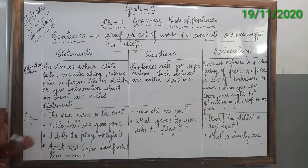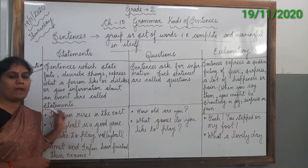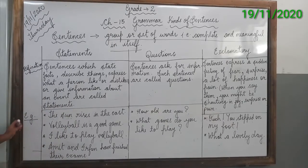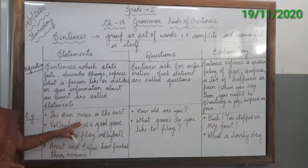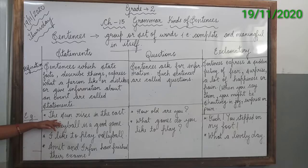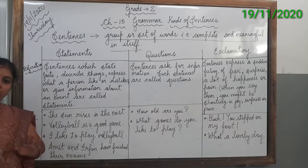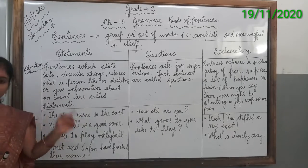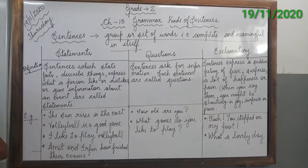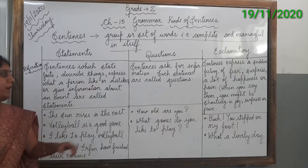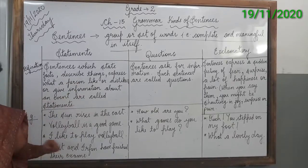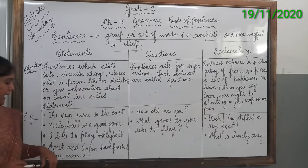Now let us see a few examples. The first one: 'The sun rises in the east.' This statement describes the fact that the sun always rises in the east. The second one is 'Volleyball is a good game' — it describes things, that volleyball is a good game.